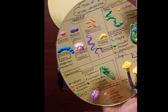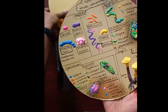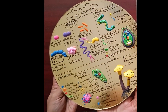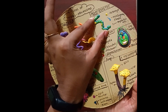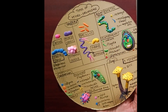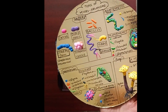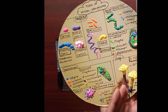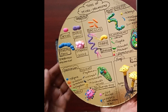Before we start, let's divide the MDF board into blocks so that we know the space, height, and width available for each organism. I'm going to write the heading 'Types of Microorganisms' and then make the blocks so we can easily create the organisms.